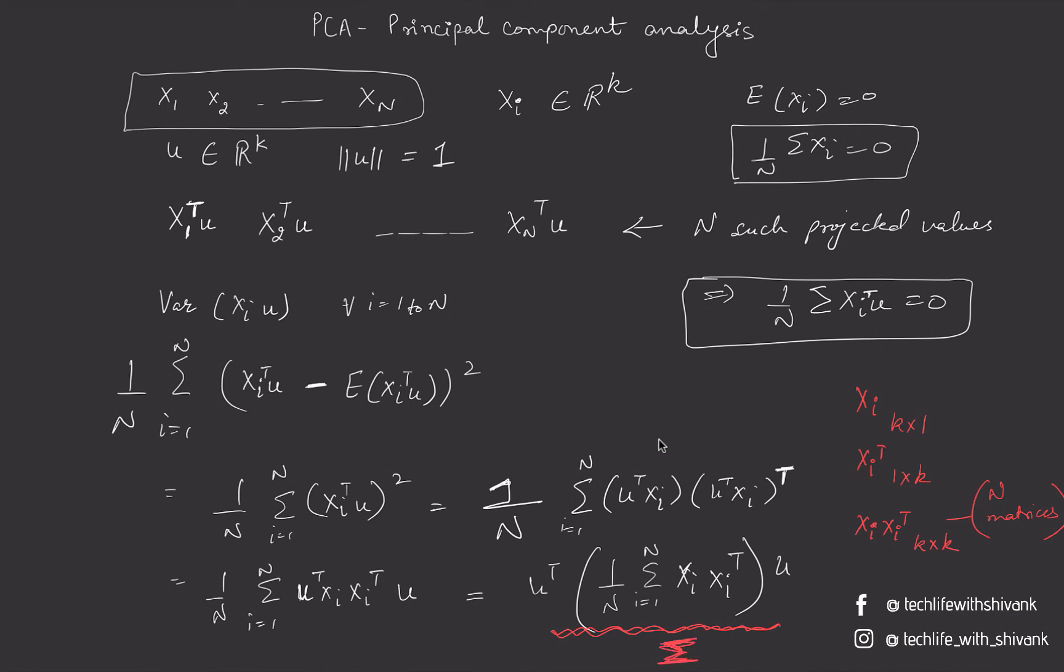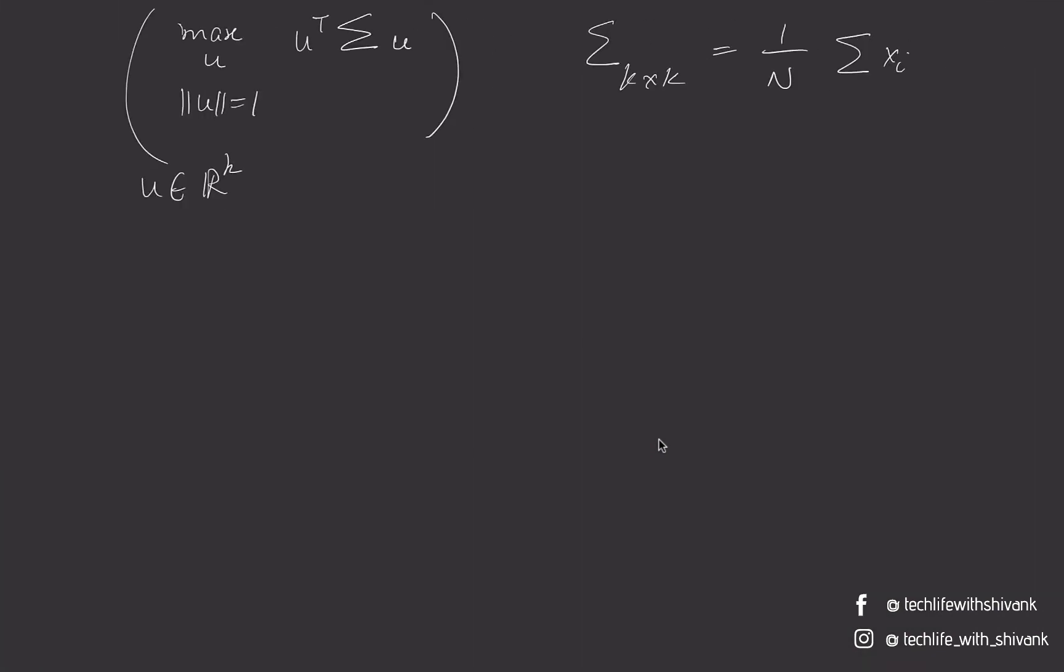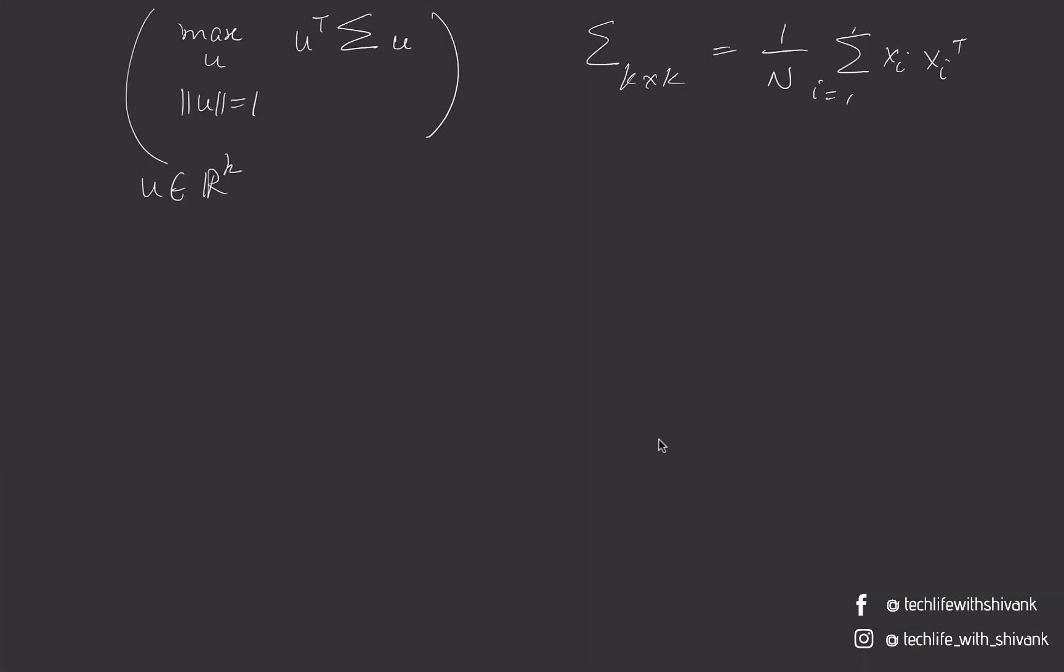So the problem of principal component analysis now reduces to: find a vector u such that magnitude of u is 1, that is a unit vector u belonging to R^k, such that this expression u transpose Sigma u is maximized, where Sigma is a k by k matrix defined as 1 by n sigma i equals 1 to n xi xi transpose, where xi are the data points for which we are calculating the PCA. So this is the formulation we get by maximizing the variance.